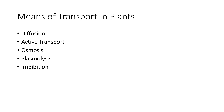Means of Transport in Plants. The transport of materials in and out of the cells is carried out by different methods: diffusion, active transport, osmosis, plasmolysis, and imbibition. We are going to learn one by one.